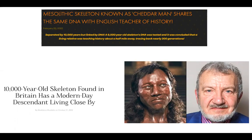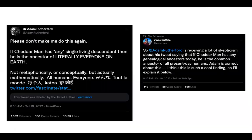However, this was not without some backlash. On Twitter, you might be familiar with Adam Rutherford. He's written a lot of books, done a lot on evolutionary biology and science communication. He tweeted: Please don't make me do this again. If Cheddar Man has any single living descendant, then he is the ancestor of literally everyone on Earth. Not metaphorically or conceptually, but actually mathematically, all humans, everyone.